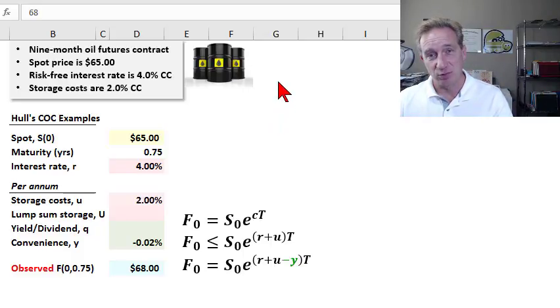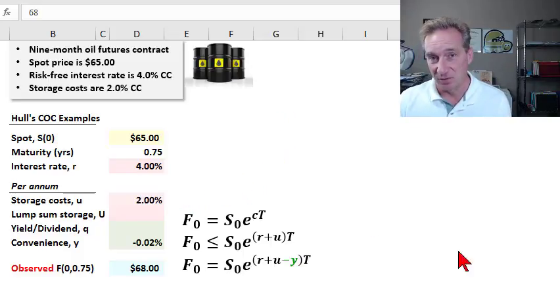As a benefit to ownership, it puts downward pressure on the futures or forward price. But unlike the other factors of the cost-of-carry model, like storage, risk-free rate, and dividend, which are all observable and are inputs into the cost-of-carry, the convenience yield is derived from the cost-of-carry model by observing the forward price.